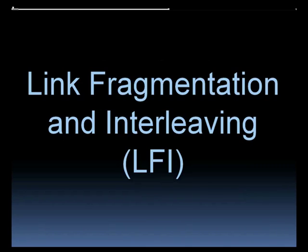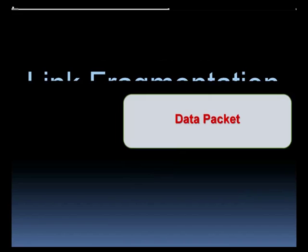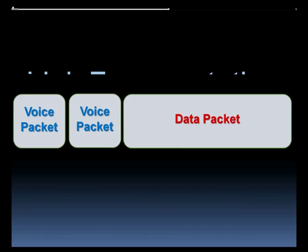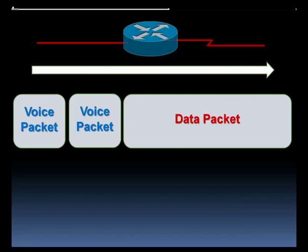LFI is a link efficiency mechanism, meaning it's going to help us make the most efficient use of the relatively limited bandwidth on a WAN link. Imagine a big data packet wanting to exit a router's interface going out to the wide area network, and behind that data packet we had a series of voice packets. If it takes too long to get that big data packet out of the router's WAN interface, the voice packets could be adversely delayed.